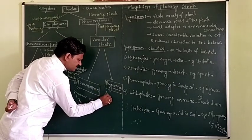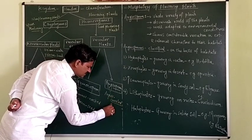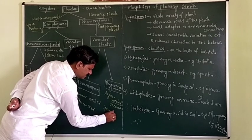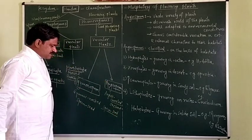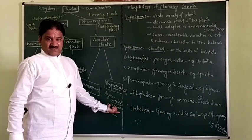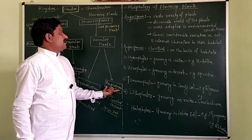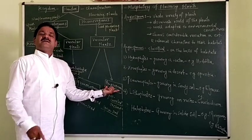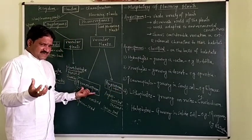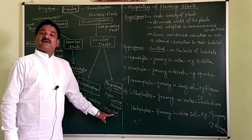Angios means concealed or enclosed, and sperm means seed. So in Angiosperm, seeds are enclosed inside the fruit. Plants which are fruit-bearing — the seeds are enclosed inside the fruit — are called Angiosperm.